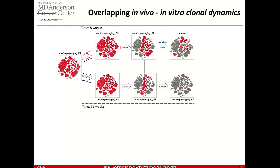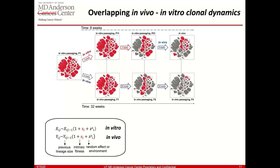We studied this in greater detail. Instead of showing 1.5 million barcodes, I'm showing 80,000 top barcodes — following them in vitro at the top panel and in vivo at the bottom panel. There is a significant time difference: in about eight weeks we are able to create a tumor using in vitro passaging, and we are able to do a similar thing in about 32 weeks in vivo. We can observe that there is an overlap between which clones finally persist in vitro and in vivo, represented in red at the rightmost panel.